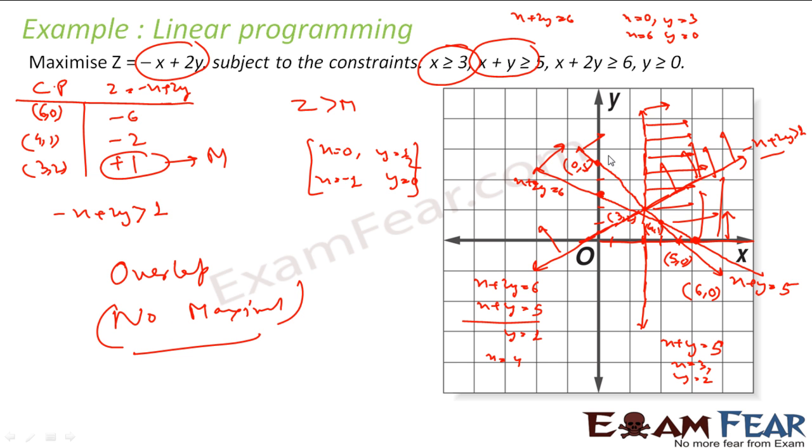Logically also, if you see, this graph is going in this direction and we can confirm that the maximum does not exist. Let's take one more example where you have to maximize x + y.